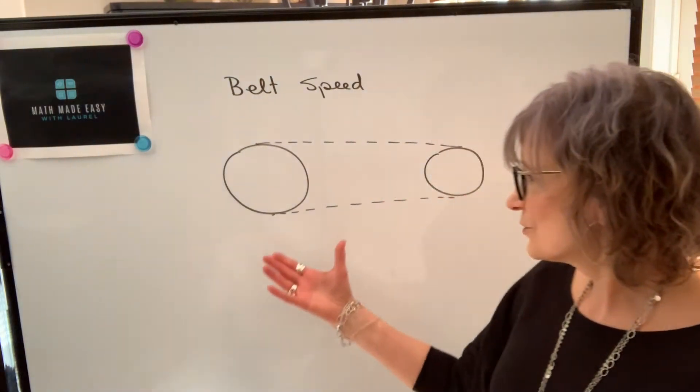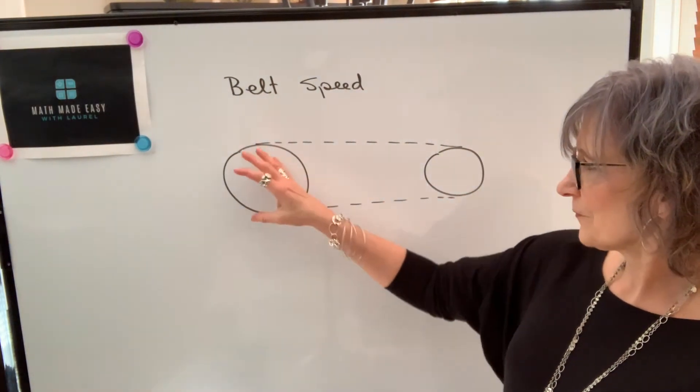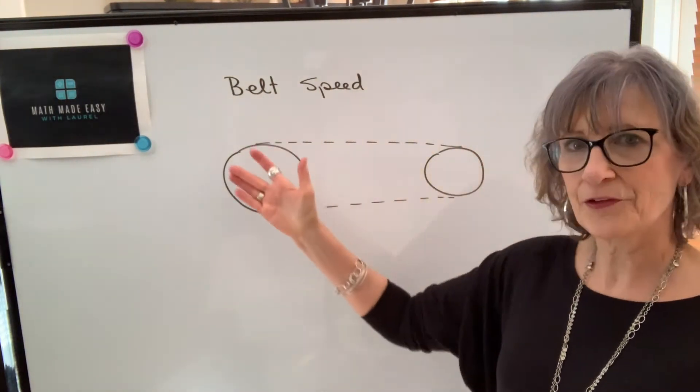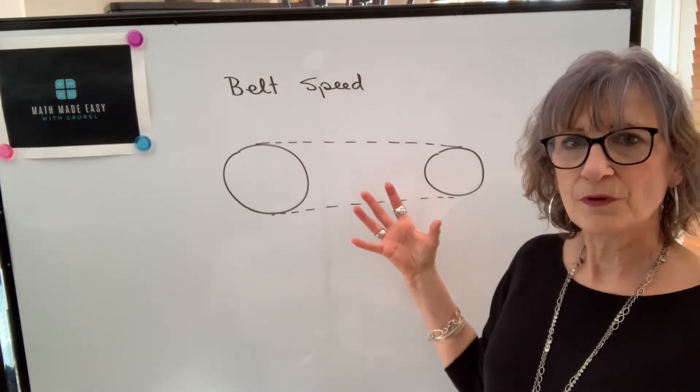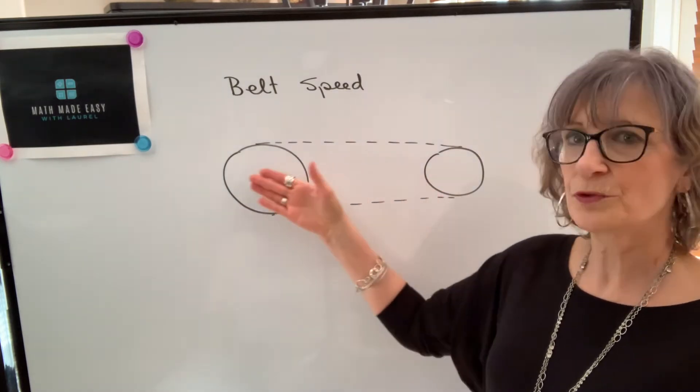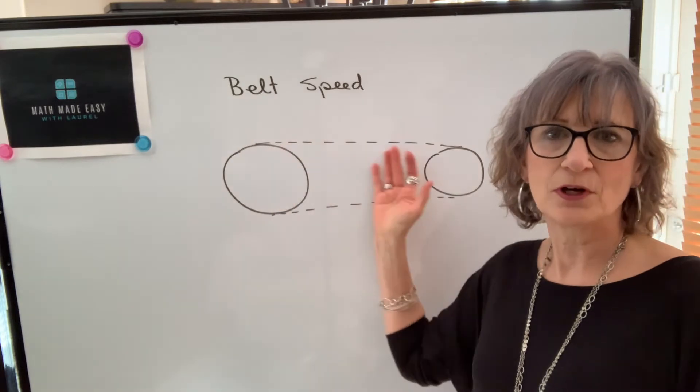So if we take a situation where we have two pulleys belted together, we know how to find the speed of one if we know the speed of the other, as long as we've got both sizes.